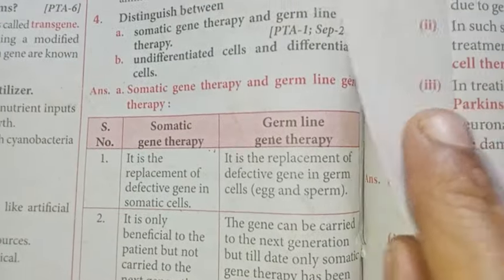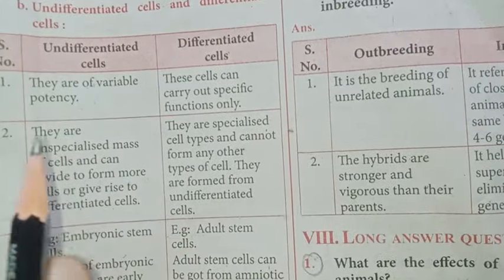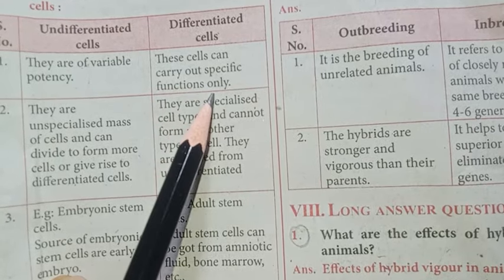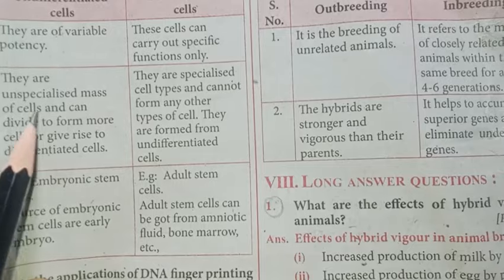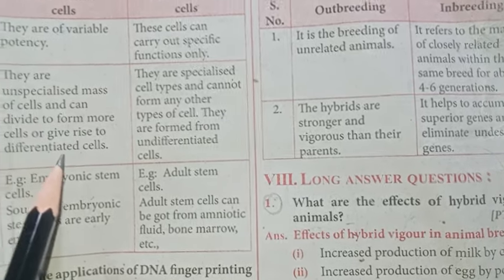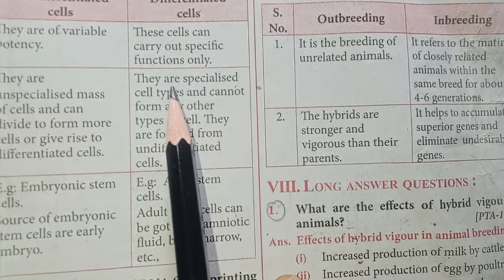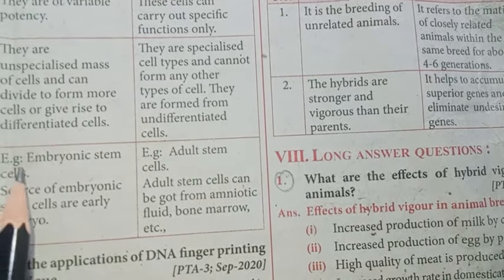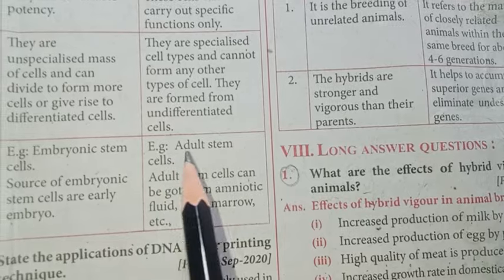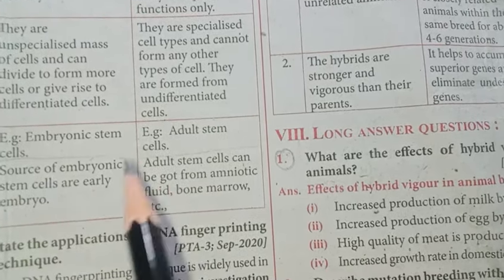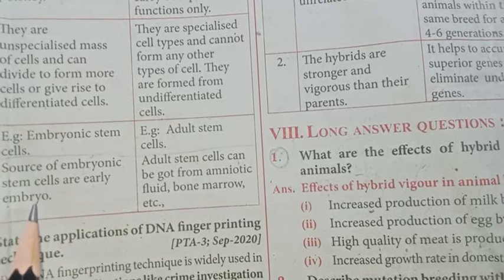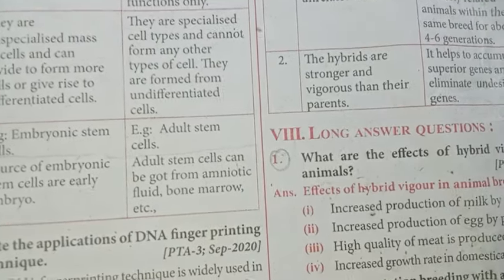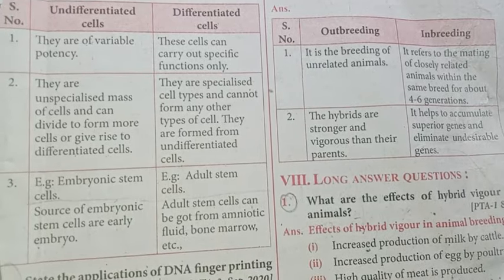Distinguish between undifferentiated cells and differentiated cells. Undifferentiated cells: they are of variable potency; they are an unspecialized mass of cells that can divide to form more cells or give rise to differentiated cells; example — embryonic stem cells, which can be obtained from amniotic fluid and bone marrow. Differentiated cells: they can carry out specific functions only; they are specialized cell types and cannot form any other types of cells; they are formed from undifferentiated cells; example — adult stem cells.